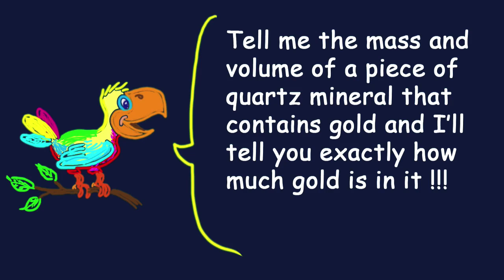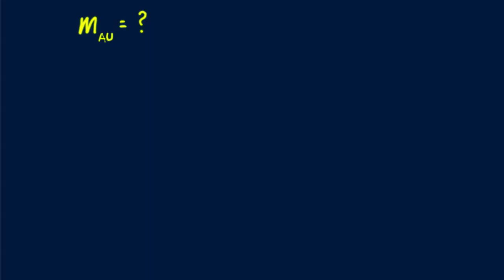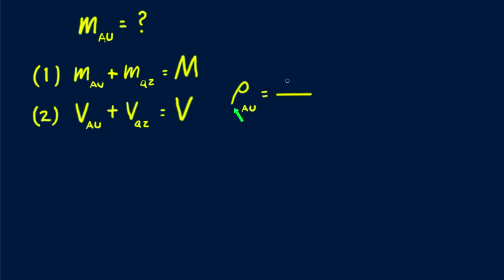We want to find the mass of gold in a given chunk of quartz, so we focus on our beginning point: mass equals. We know that the mass of gold plus the mass of quartz equals the mass of the chunk, which we label big M. We also know that the volume of the gold plus the volume of the quartz equals the volume of the chunk, which we label big V. What ties mass and volume together? That's density, rho.